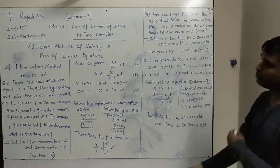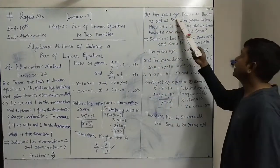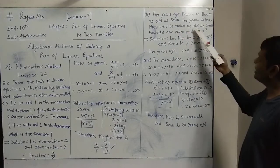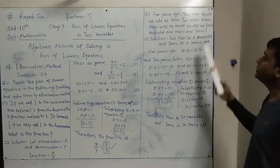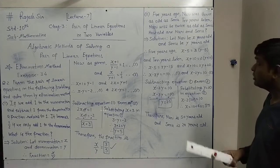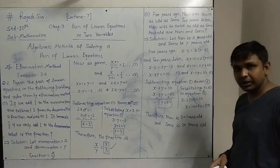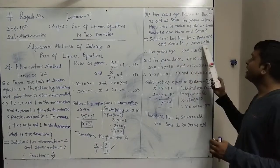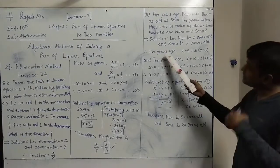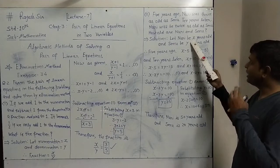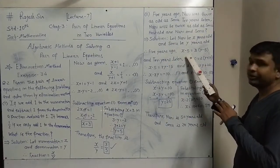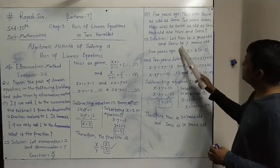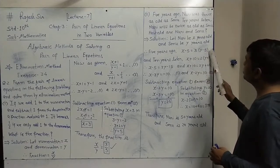The second problem: 5 years ago, Nuri was 3 times as old as Sonu, and 10 years later, Nuri will be twice as old as Sonu. How old are Nuri and Sonu? In this also we will go the same way — first make the pair of linear equations. Let Nuri be x years old and Sonu be y years old. Five years ago, Nuri's age was x−5 and Sonu's age was y−5.